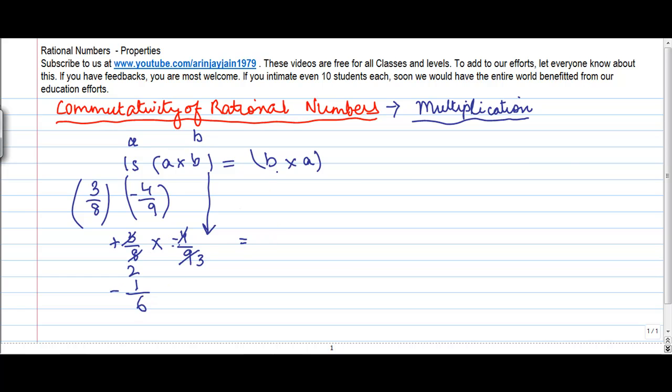How about the right side, b into a? Now b here is minus 4 by 9 into 3 divided by 8. Of course this goes into this 2 times, 3 goes into 9 three times, so we get 1 upon 6. Now minus into plus we again get minus.